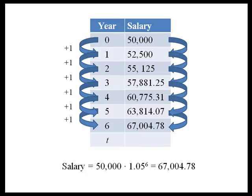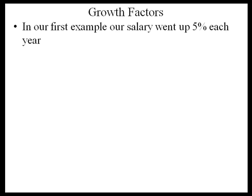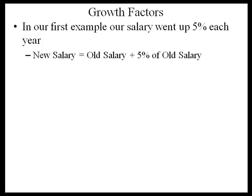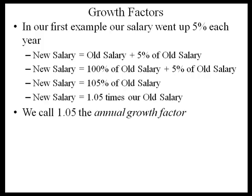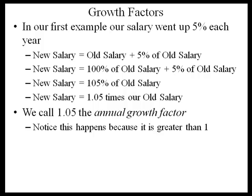So if we wanted to generalize this for t years, then our salary would be $50,000 times 1.05 to the t. Now let's talk about where that 1.05 came from — we're going to talk about growth factors. In our example, our salary went up by 5% each year, so our new salary was equal to our old salary plus 5% of our old salary. That's 100% of our old salary plus 5% of our old salary, making our new salary 105% of our old salary, which as a decimal is 1.05. We call this 1.05 an annual growth factor — it's the number we're repeatedly multiplying by to get each next salary. Notice that it's growing because it's greater than 1. This is how repeated multiplication gives us an exponential function, and how we can find an exponential function by finding that constant percent change.